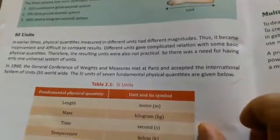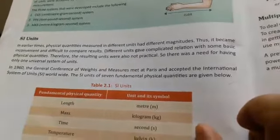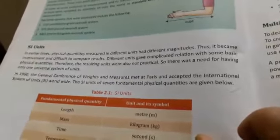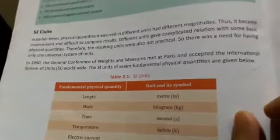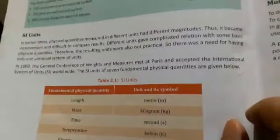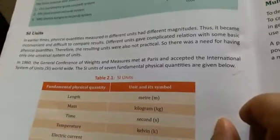In 1960, the General Conference of Weights and Measurements met in Paris and accepted the International System of Units, which is called SI unit worldwide.